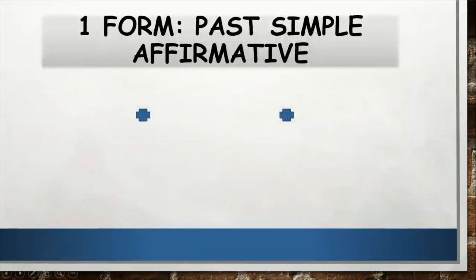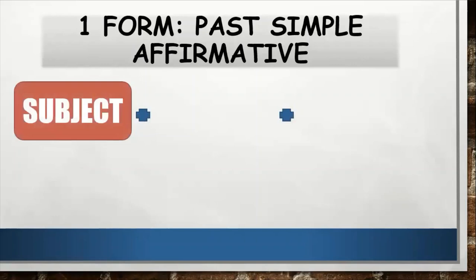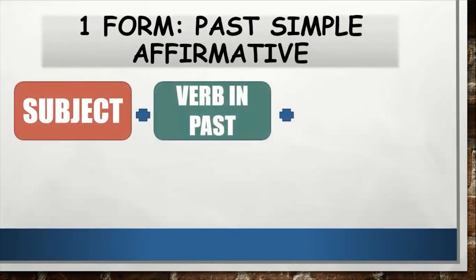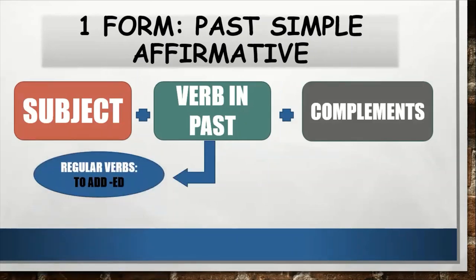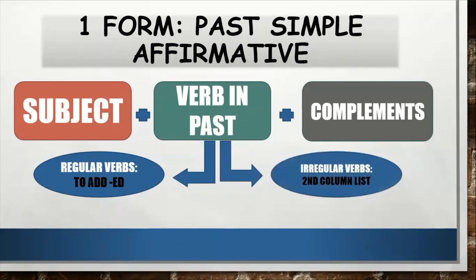Now I'm going to explain the forms. Our first form is past simple affirmative. The structure is: subject + verb in past + complements. How do we form the verb in past? If we have a regular verb, we add -ed. For example: played. If we have an irregular verb, we use the second column of the list. Have you studied the list? Do you remember it?